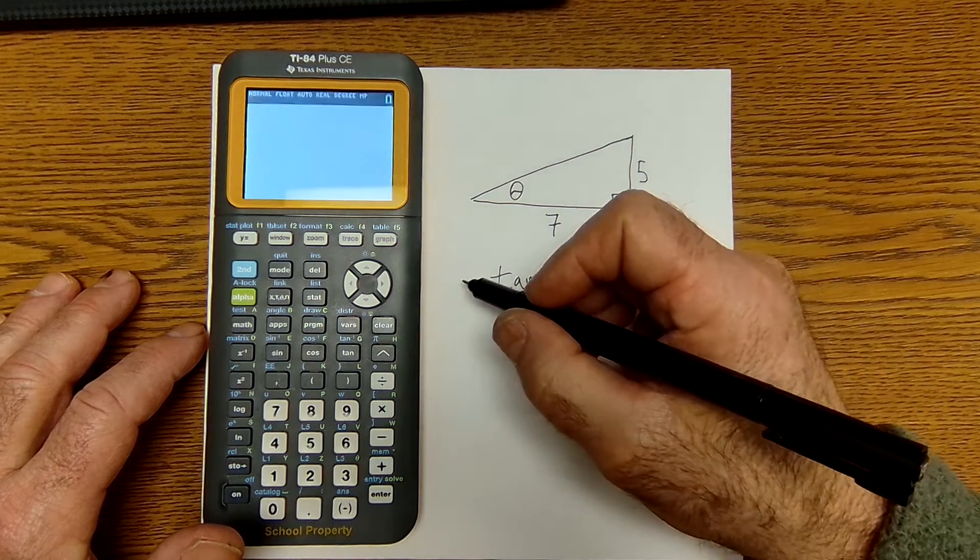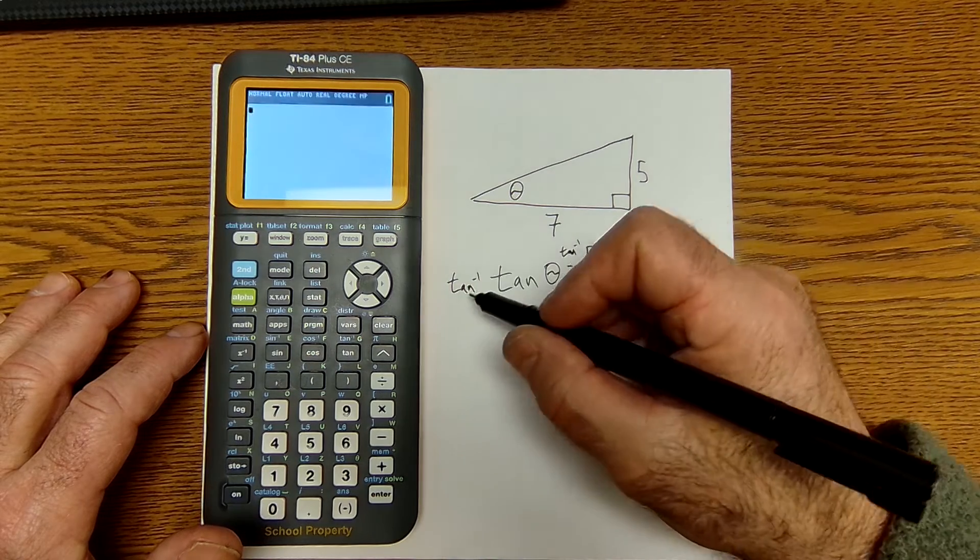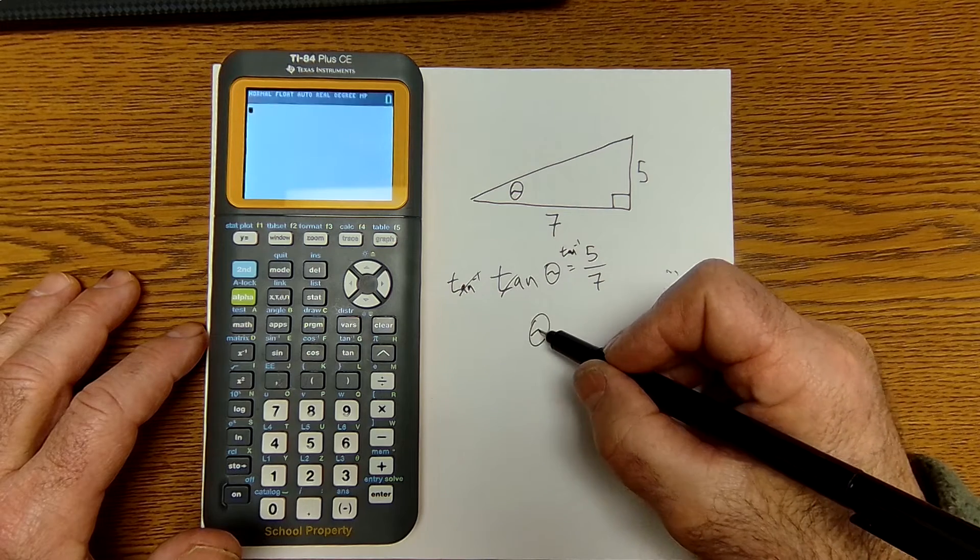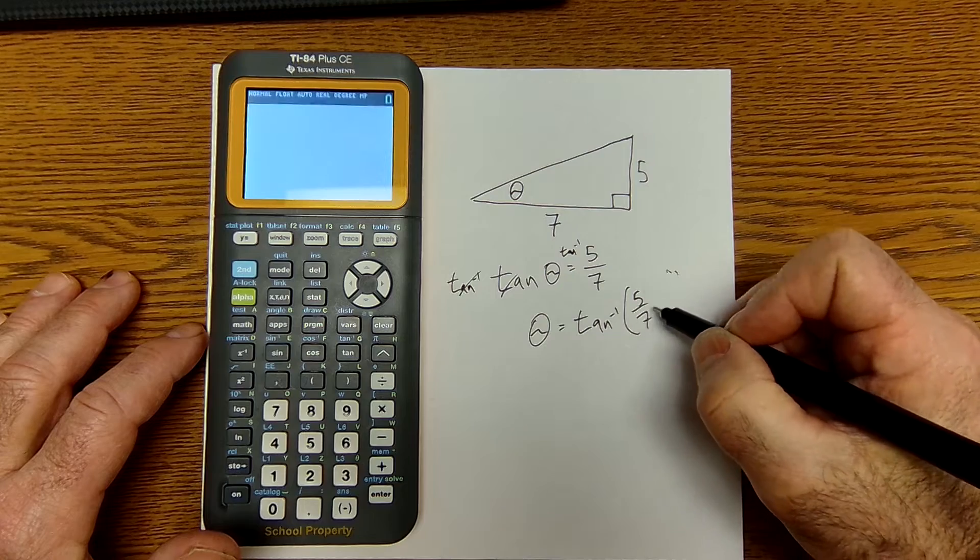I've got to get that by itself. I take the inverse tan of both sides. Those will cancel, so my angle theta is inverse tan of the quantity 5 sevenths.